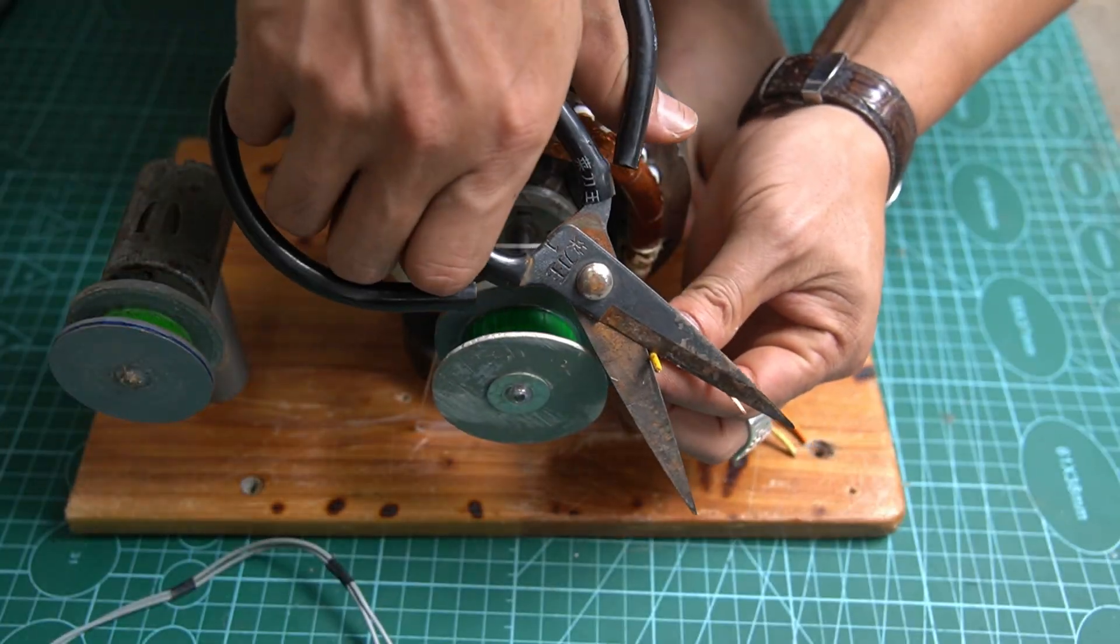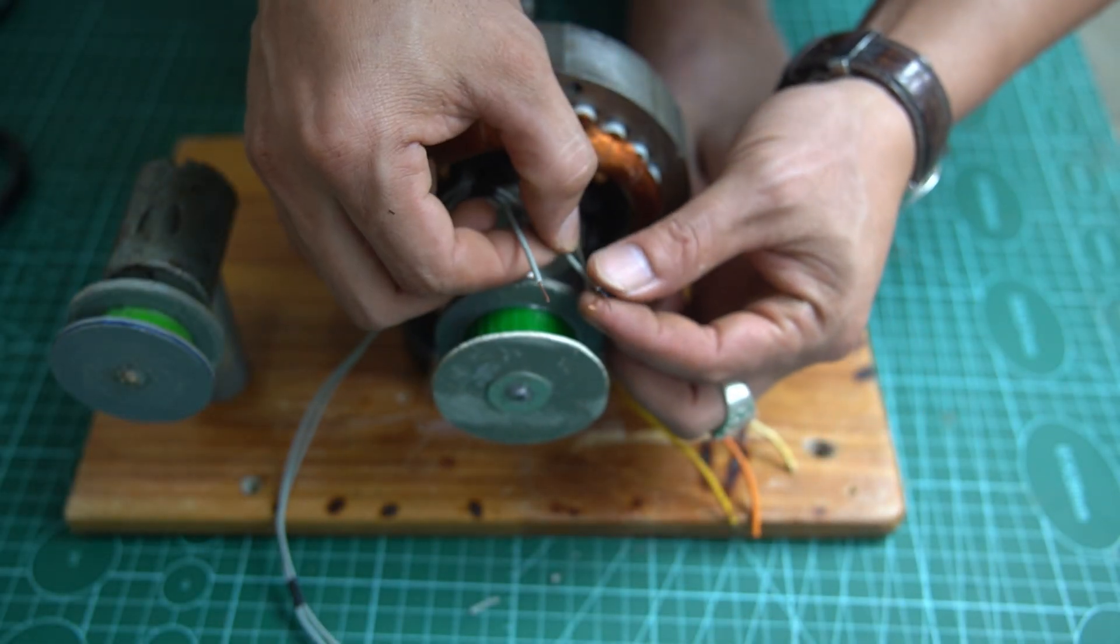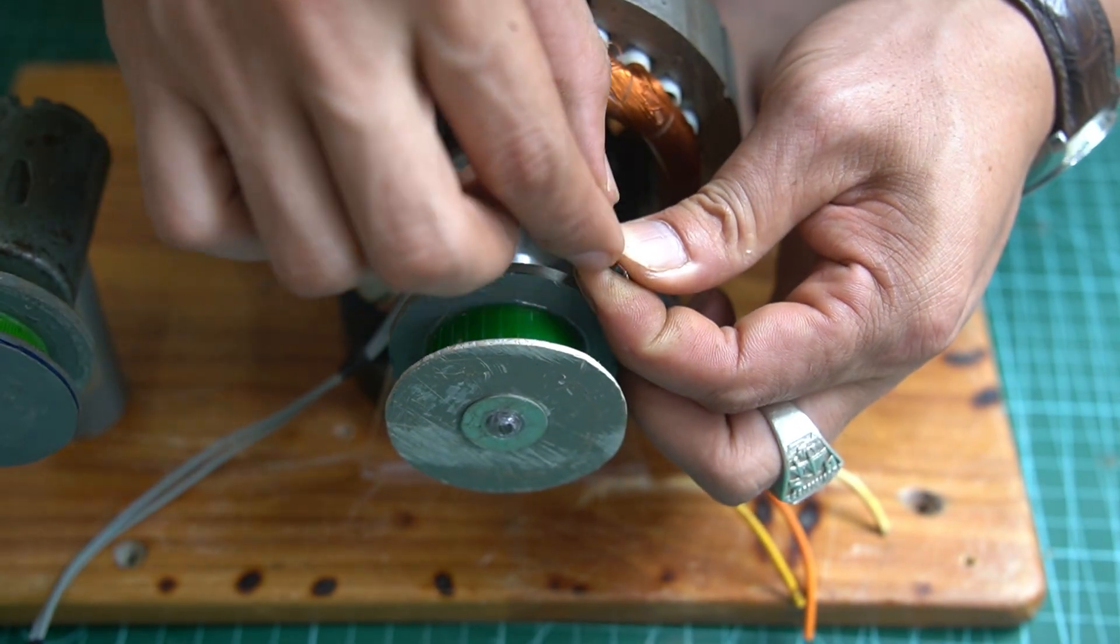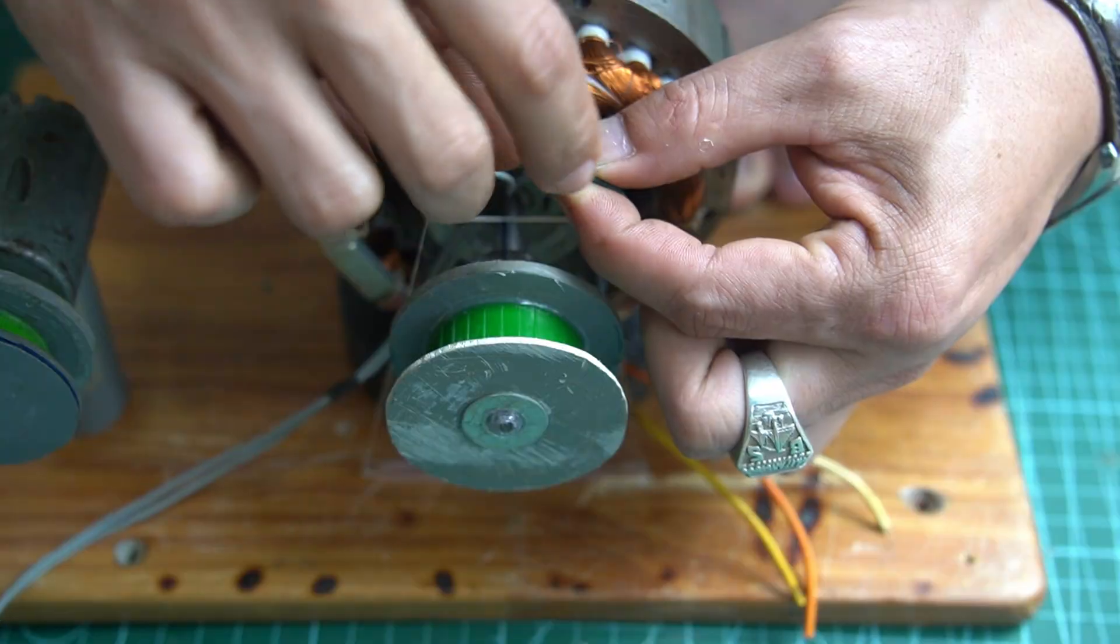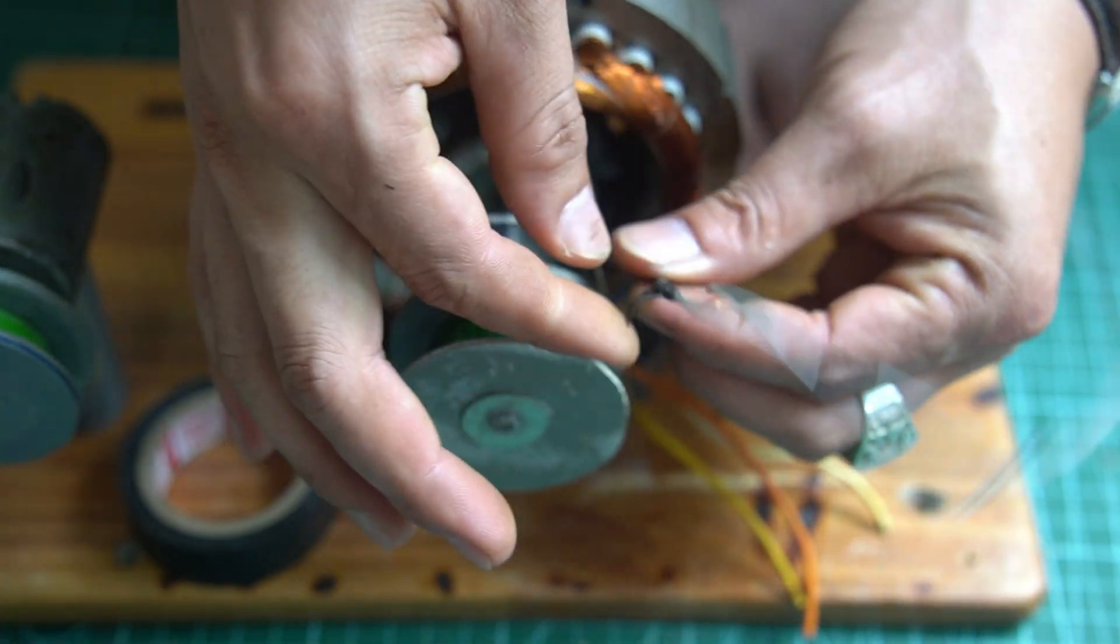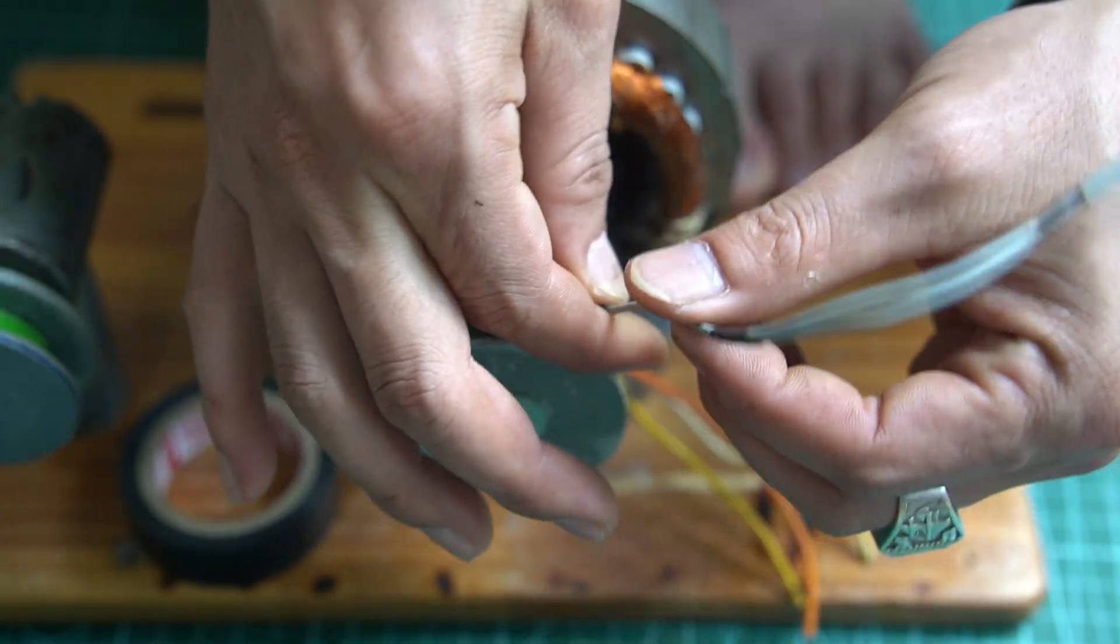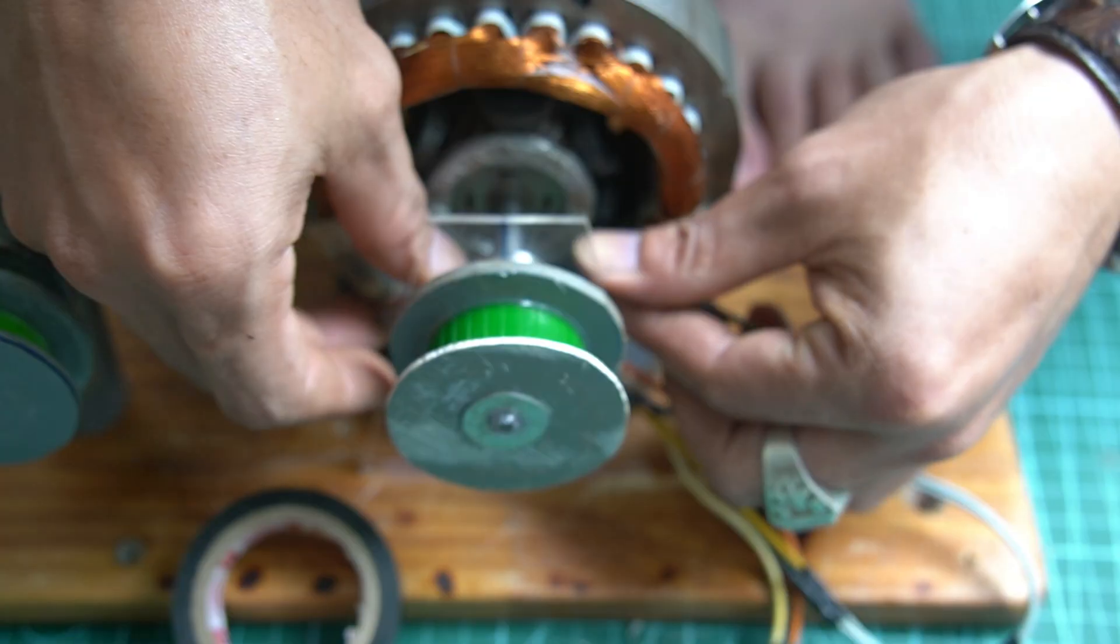Now I will use electrical wire to extend the output ends of the copper coil, making it easier to connect later. Use electrical tape to wrap the connection tightly, providing insulation and ensuring a secure and safe joint.